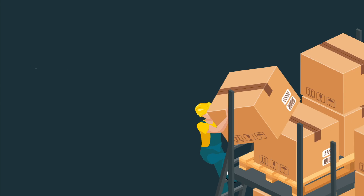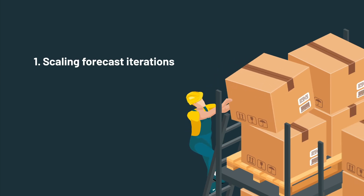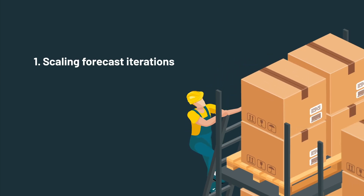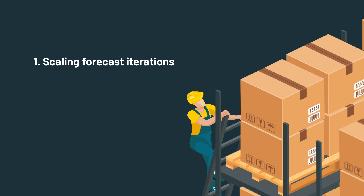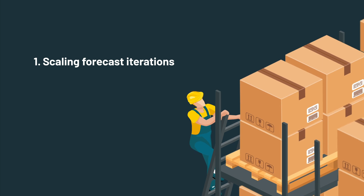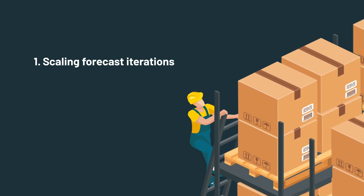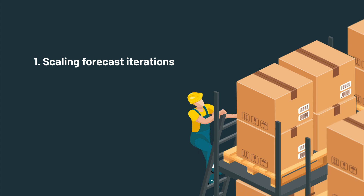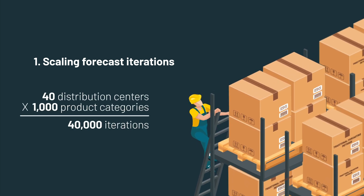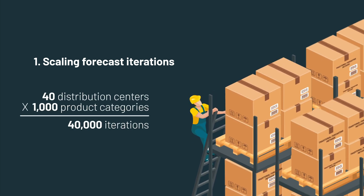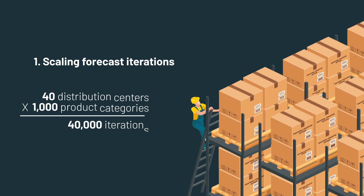First, legacy tools built on data warehouse architectures use serialized processes to calculate forecasts. If you just calculate promotion groups, not individual items, at a weekly level for 40 distribution centers, that is 40,000 iterations of a statistical model running every week.